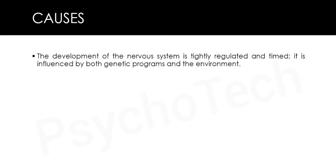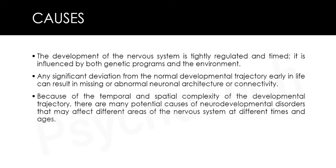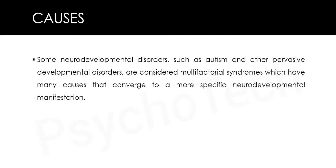The development of the nervous system is tightly regulated, timed, and influenced by both genetic programs and the environment. Any significant deviation from the normal developmental trajectory early in life can result in missing or abnormal neuronal architecture or connectivity. Potential causes of neurodevelopmental disorders include social deprivation, genetic and metabolic diseases, immune disorders, infectious diseases, nutritional factors, physical trauma, and toxic/environmental factors. Some disorders such as autism are considered multifactorial syndromes with many converging causes.